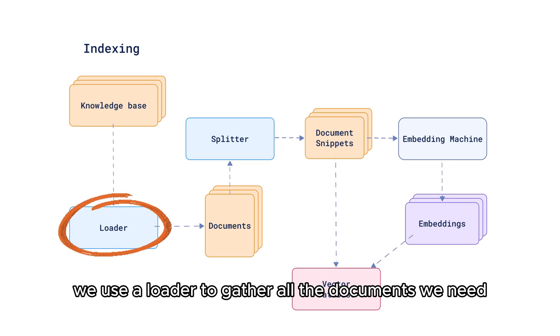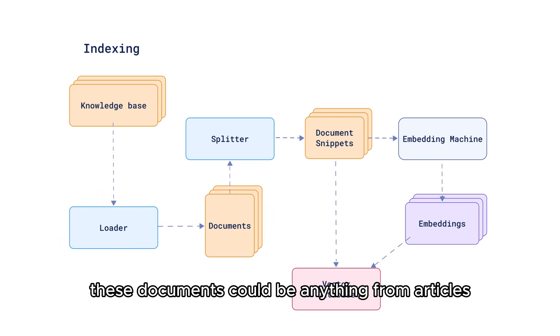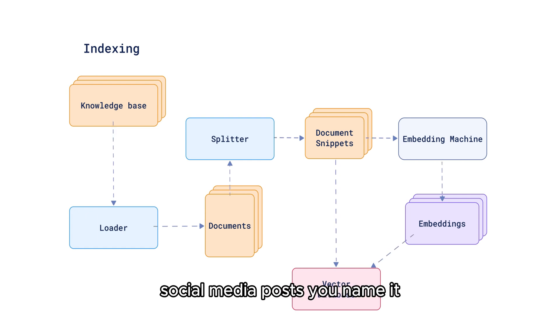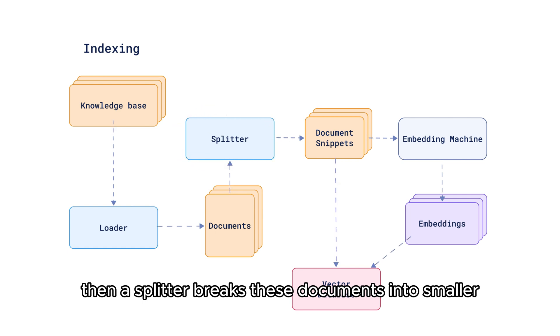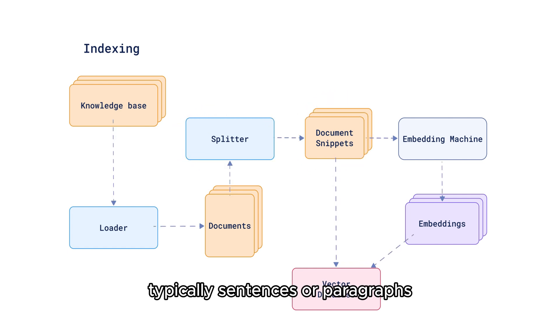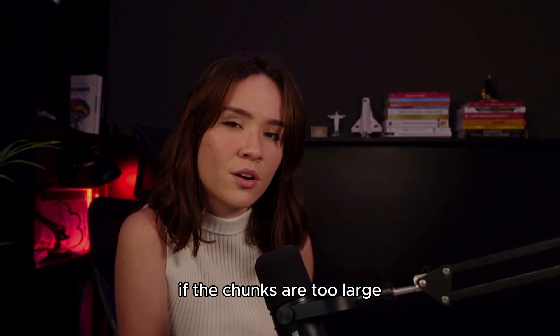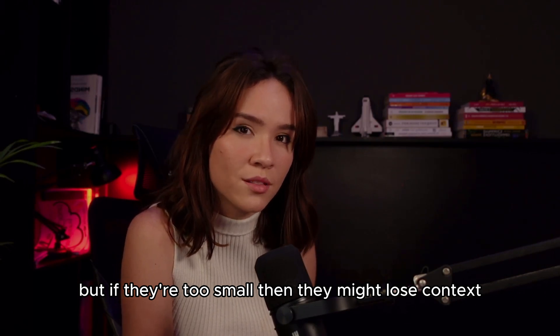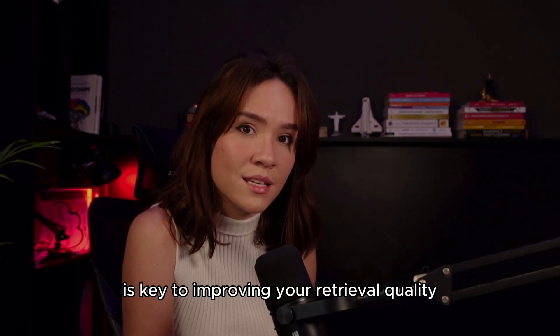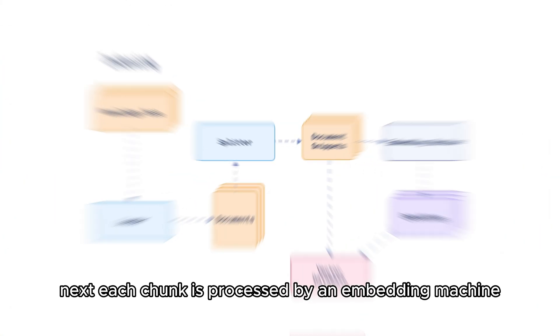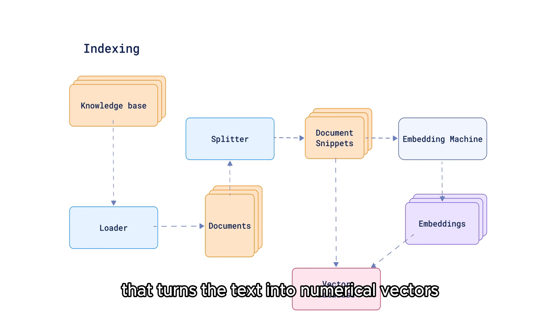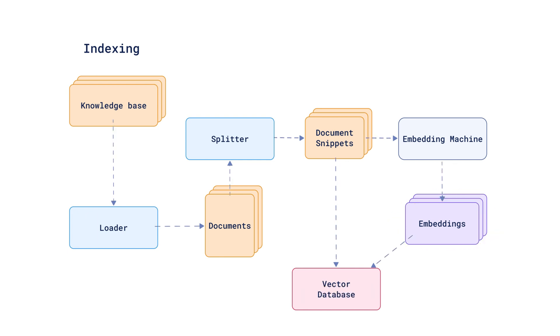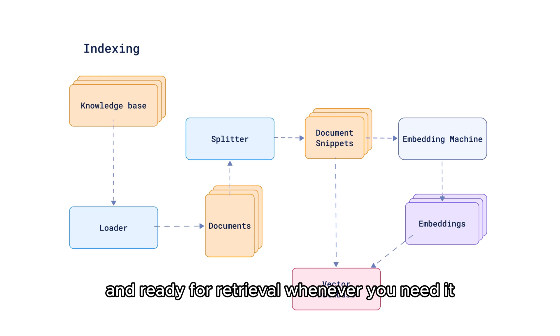Indexing your data to the vector database is the first step of your RAG system. First, we use a loader to gather all the documents we need — these documents could be anything from articles, books, webpages, social media posts, and more. Then, a splitter breaks these documents into smaller, more manageable chunks, typically sentences or paragraphs. If the chunks are too large, they might miss specific details, but if they're too small, they might lose context. Finding the perfect balance is key to improving your retrieval quality. Next, each chunk is processed by an embedding model that turns the text into numerical vectors that capture the meaning of the data. Finally, these vectors are stored in the vector database, organized by the HNSW index, and ready for retrieval whenever you need it.